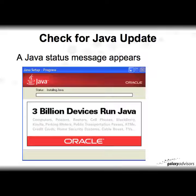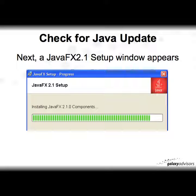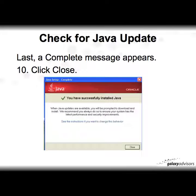A Java status message appears giving some promotion about three billion devices running Java. Then you're going to see a little window show up — it might take a minute or so — and a Java FX 2.1 setup window will appear. A little green bar will go back and forth to indicate that it's installing those components. Last, a complete message appears saying you have successfully installed Java. Click close at the lower bottom right.